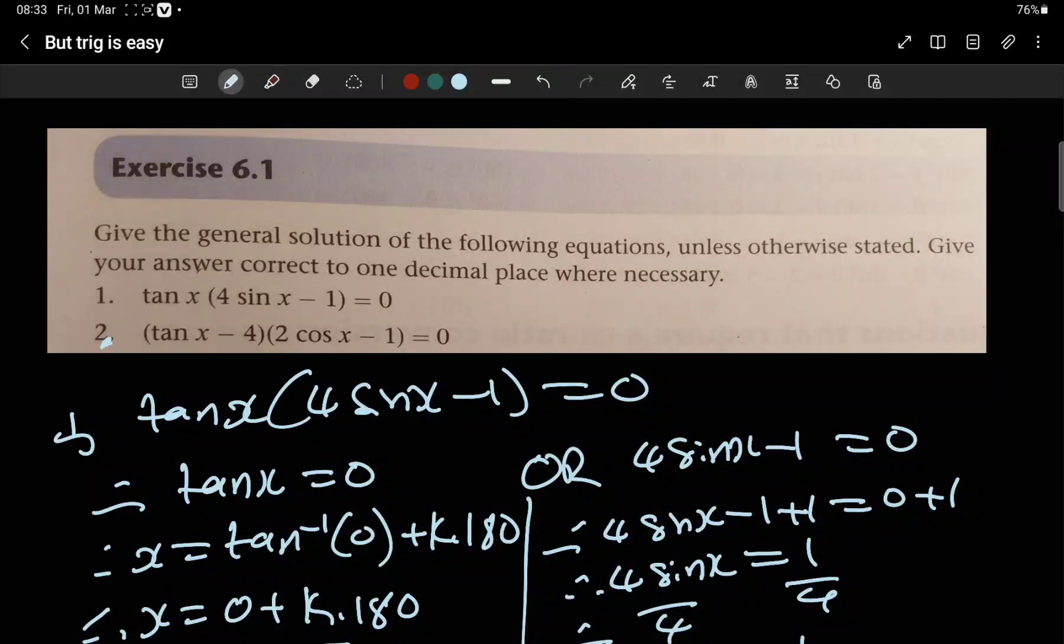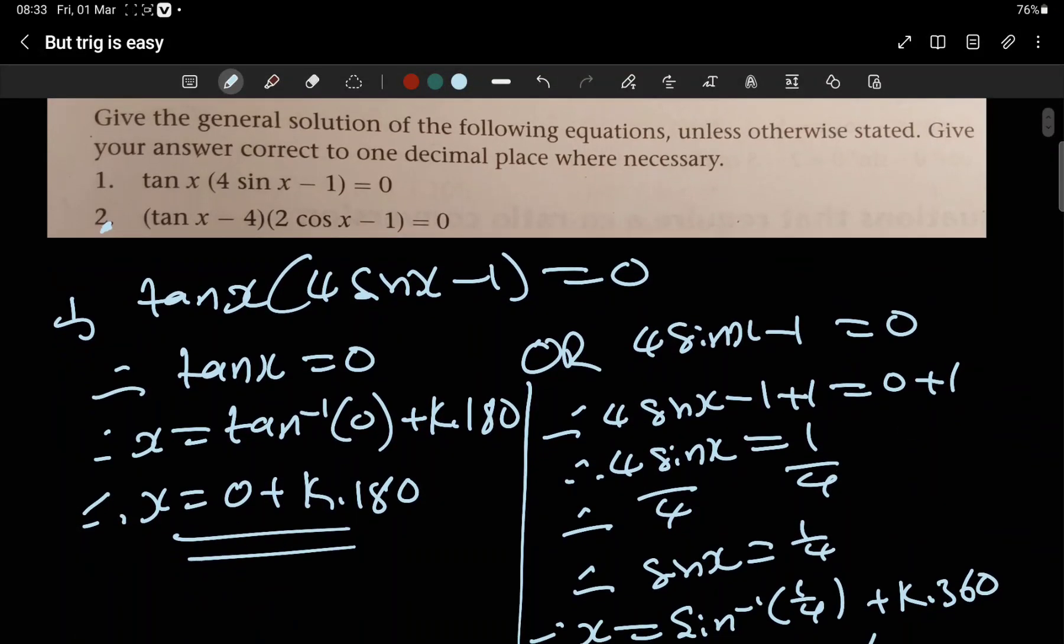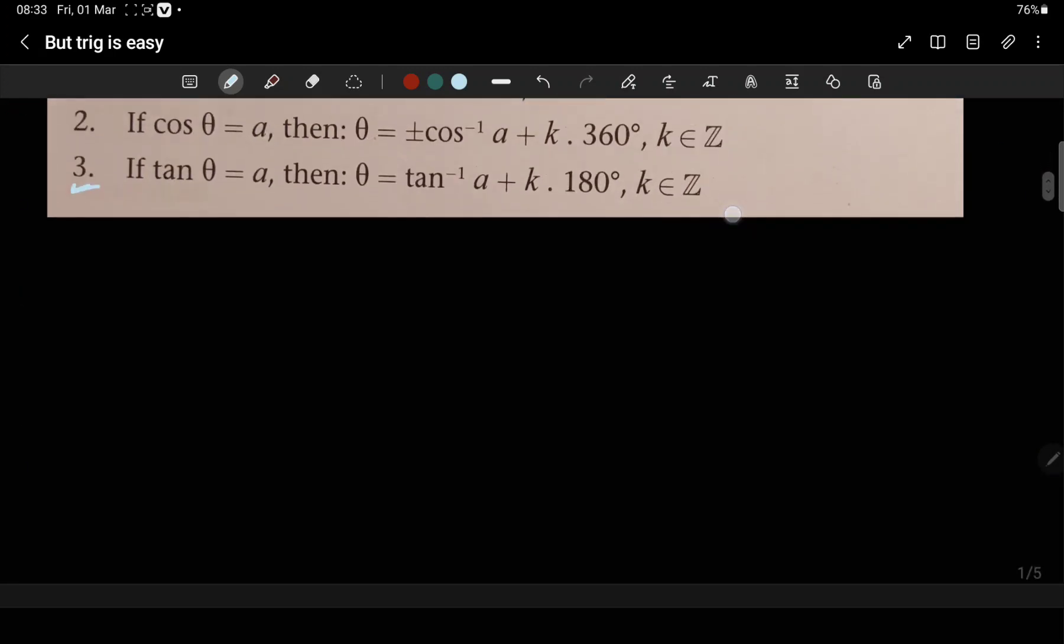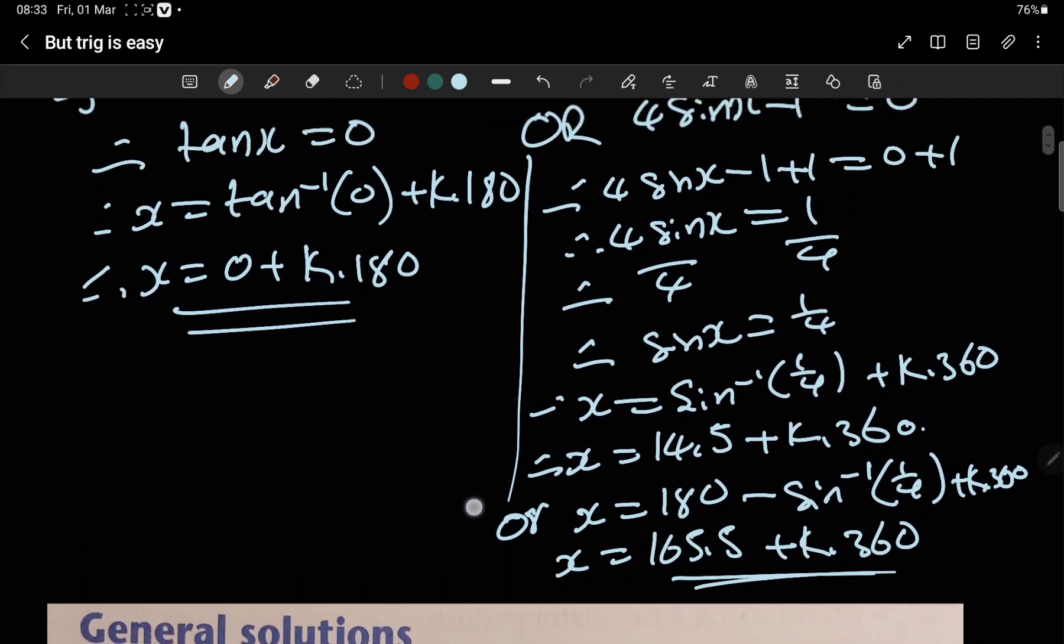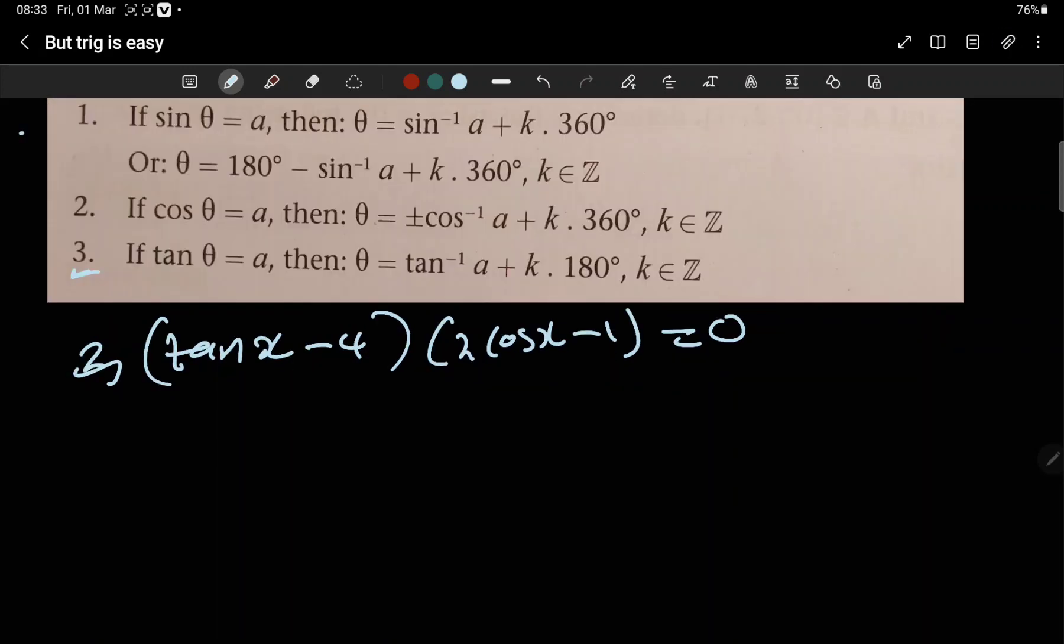Okay, now welcome to part two of this video. We're now doing number two: tan(x) minus... Let's do it here. Number two, this is tan(x) minus four, times two cos(x) minus one equals zero.